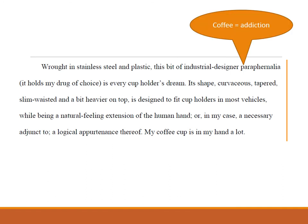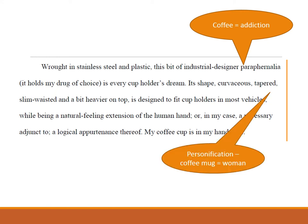He uses the word 'industrial designer paraphernalia. It holds my drug of choice.' Here he's comparing coffee to an addiction, because paraphernalia is a word associated with drug use. Then he goes into its shape: 'curvaceous, tapered, slim-waisted, and a bit heavier on top, designed to fit cup holders in most vehicles.' When he describes its shape that way — curvaceous, tapered, slim-waisted, a bit heavier on top — he's using personification, comparing his coffee mug to a woman.